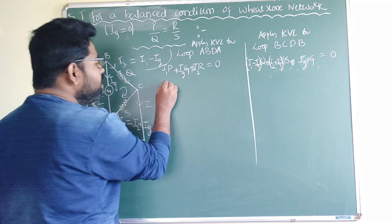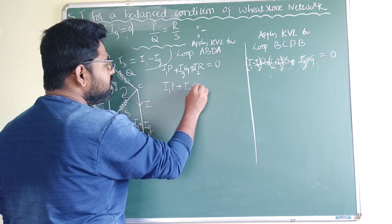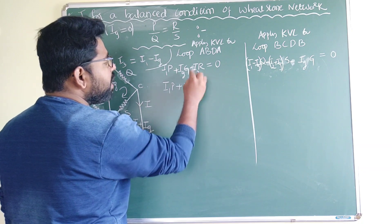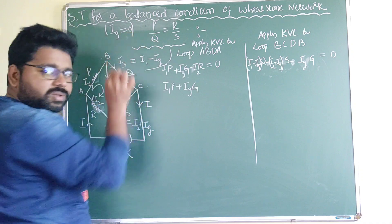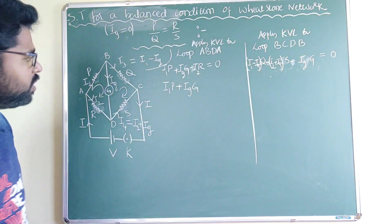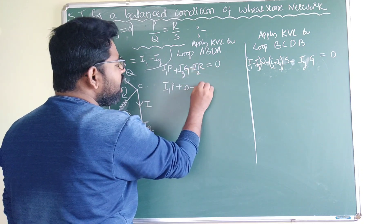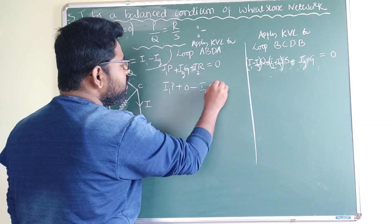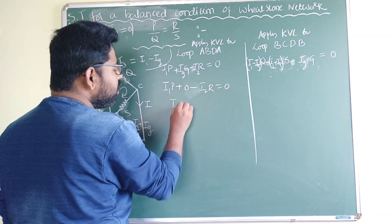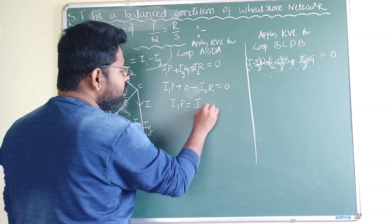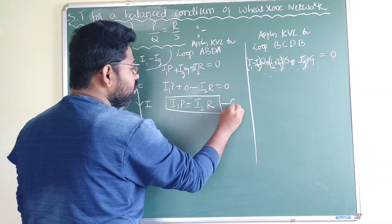Now substituting Ig = 0 into the first equation: I1·P + 0 − I2·R = 0, which gives I1·P = I2·R. Call this Equation 1.